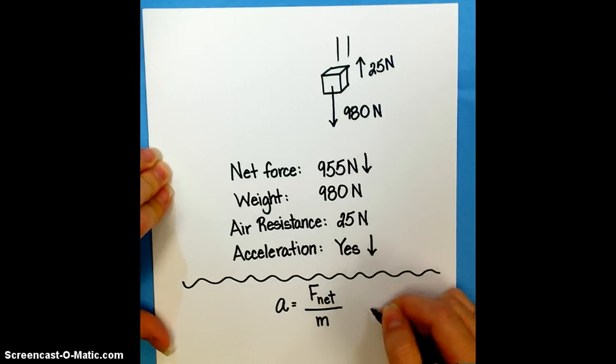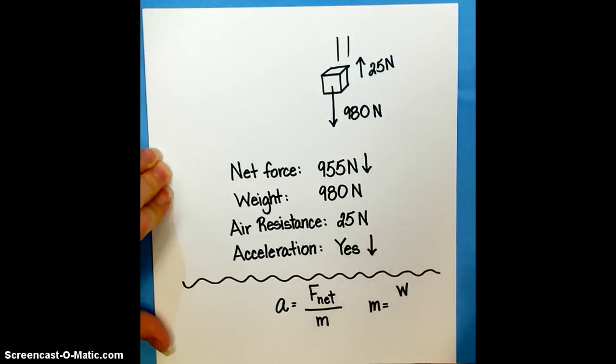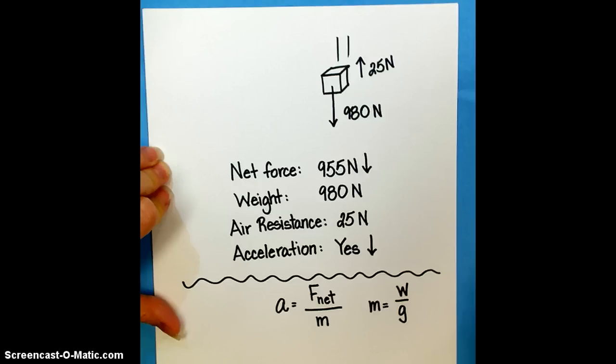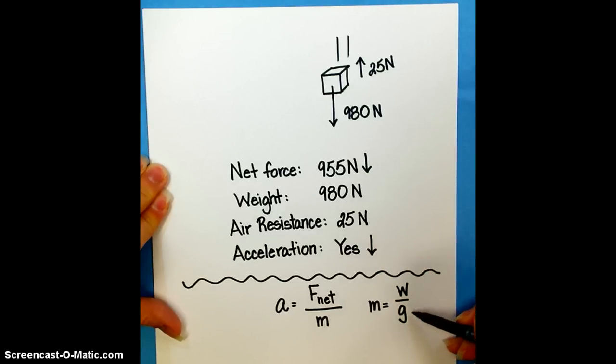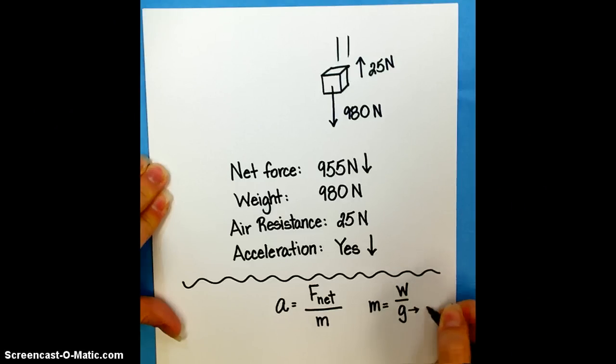We can find mass if we know an object's weight and we know the acceleration due to gravity, because weight is a measure of gravitational force. So in this case, the weight is the 980 newtons that we've already seen. And I have to tell you what the acceleration due to gravity is, because it's always the same thing for objects falling towards the earth. And that's 9.8 meters per second squared.